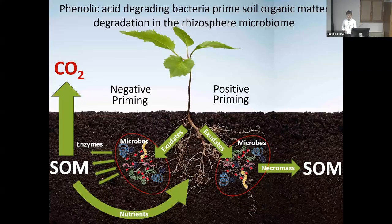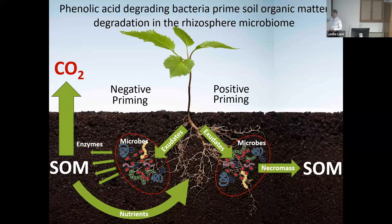The phenomenon I'm going to be talking about today — something we're just starting to really look at in my lab — is called priming. The idea of priming goes back a long way. It's the idea that microbes are interacting with soil organic matter, so the carbon that's stored in the soil, which is basically the basis of soil fertility. Plants do not have the enzymes they need to get access to this, just like you can't digest plant material without your microbes.